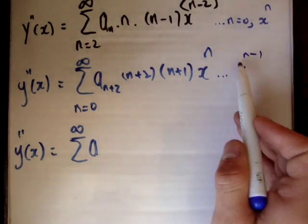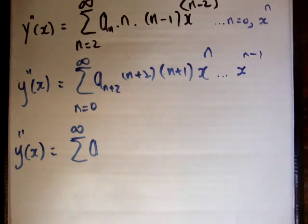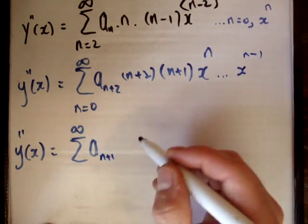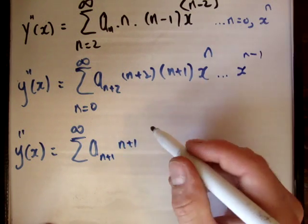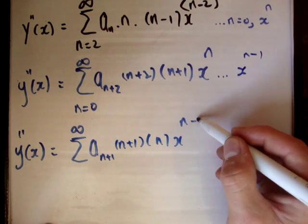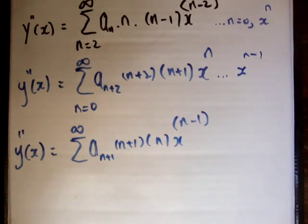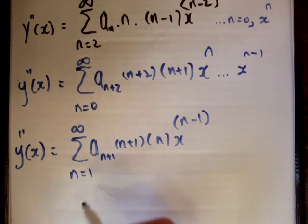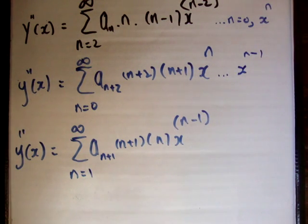So this is where I want to insert n becomes n minus 1 everywhere. So this becomes a n plus 1, this becomes n plus 1, this becomes n, this becomes x to the n minus 1. Now, where we decrease the power, we increase where it starts.